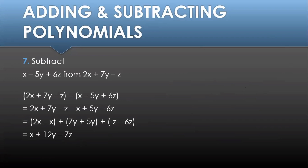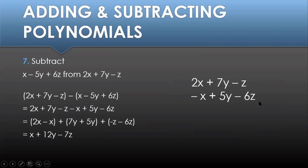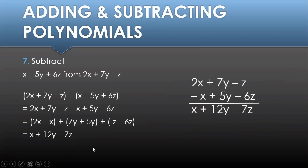Another way is to arrange the terms vertically with similar terms on the same column, change the sign of the subtrahend, and proceed to algebraic addition: 2x plus negative x gives x; 7y plus 5y gives 12y; and negative z plus negative 6z gives negative 7z. Either way, you get the same answer.